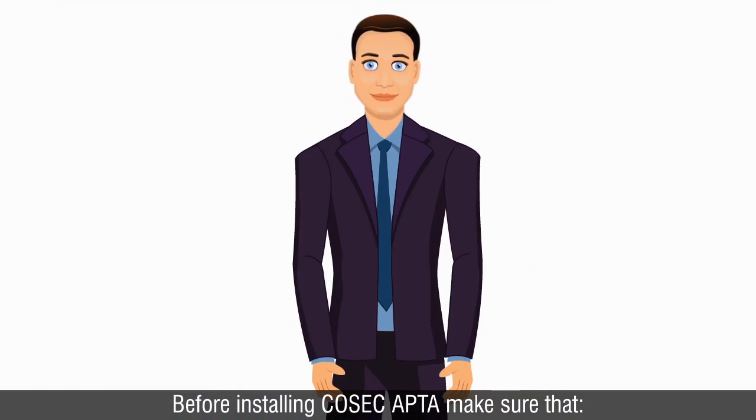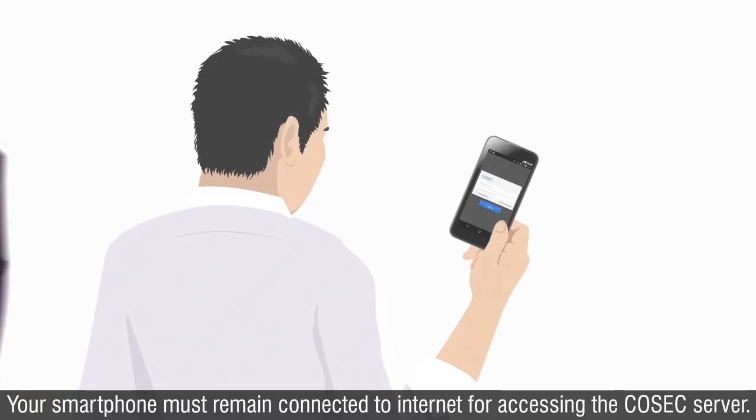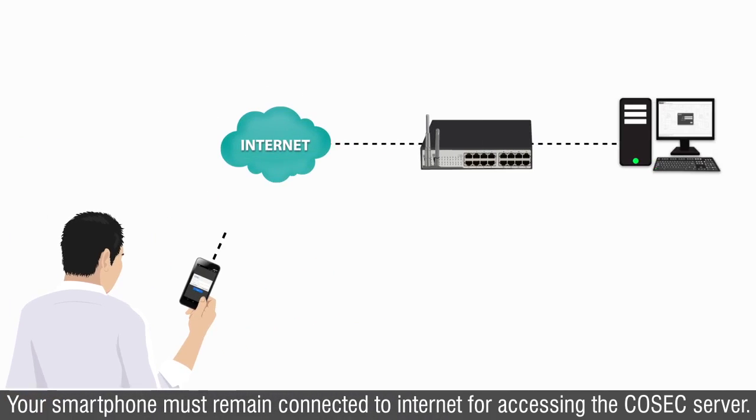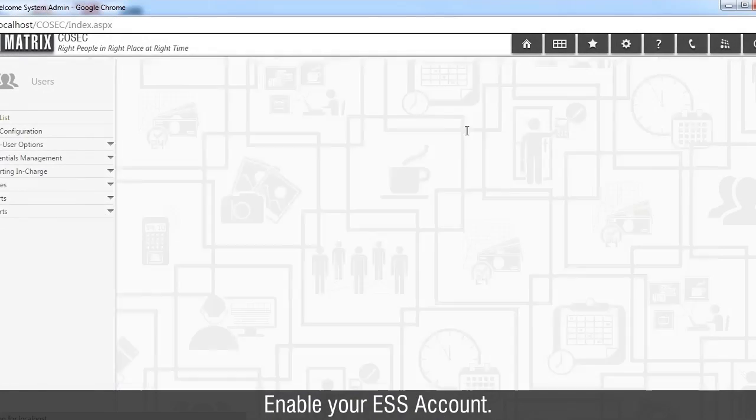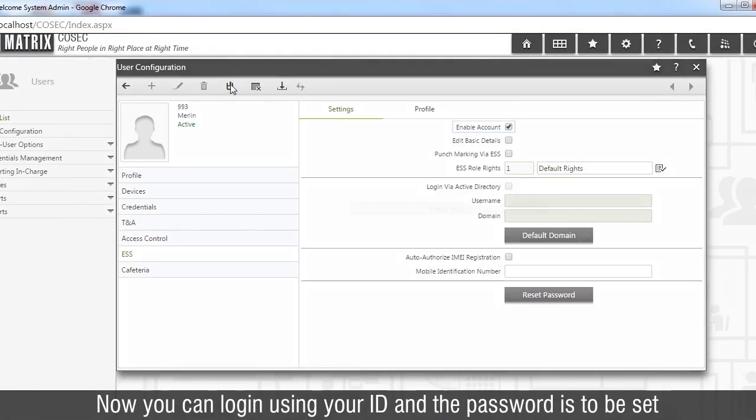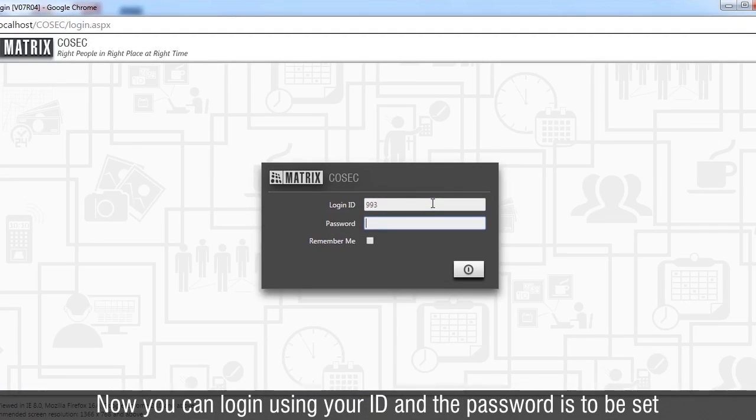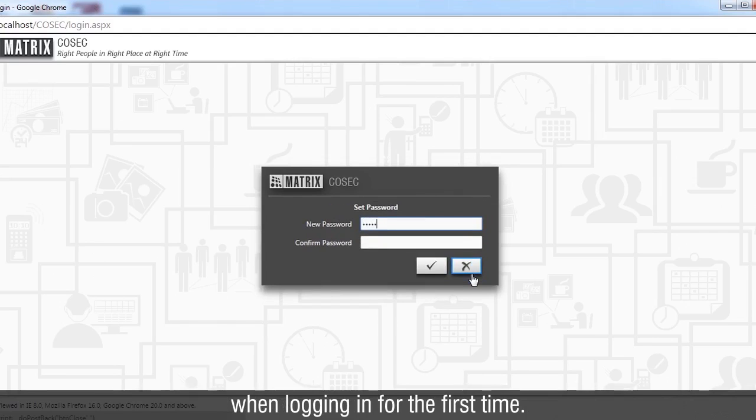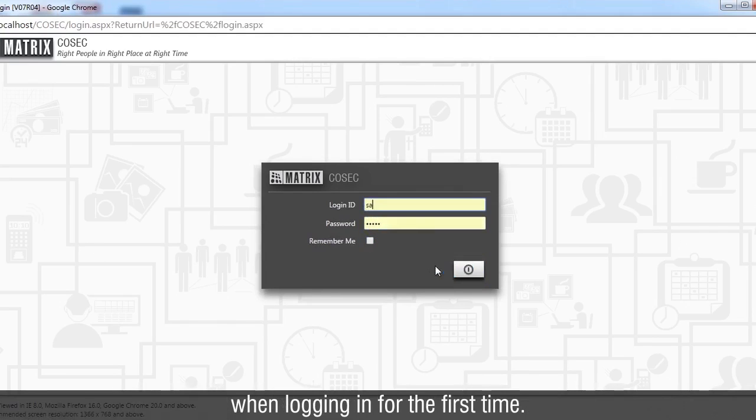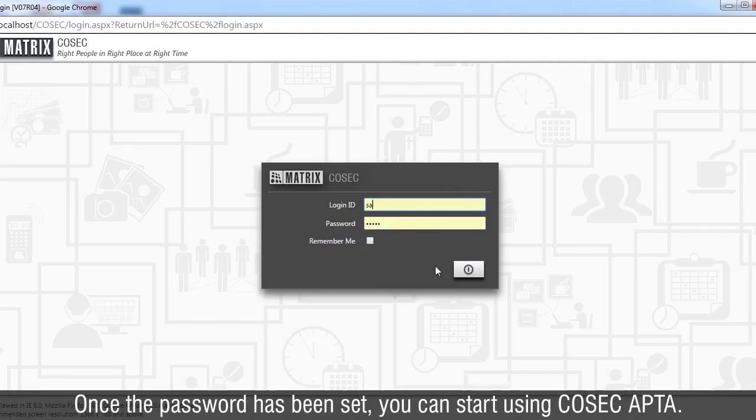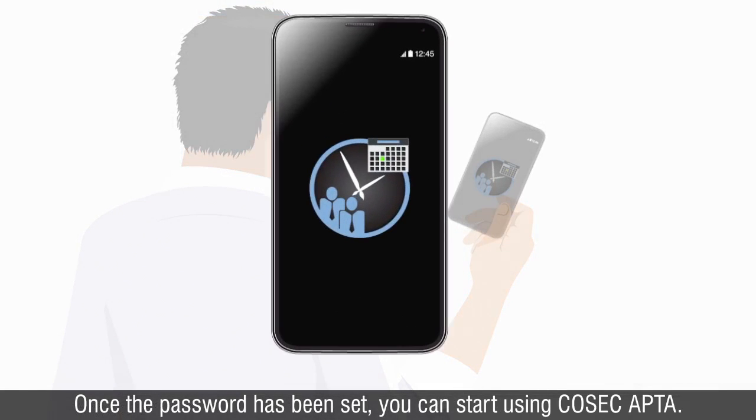Before installing Cosec Apta, make sure that your smartphone must remain connected to internet for accessing the Cosec server. Enable your ESS account. Now you can log in using your ID, and the password is to be set when logging in for the first time. Once the password has been set, you can start using Cosec Apta.